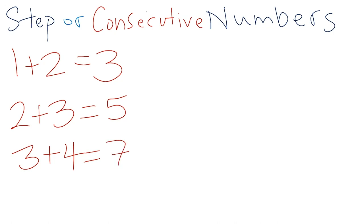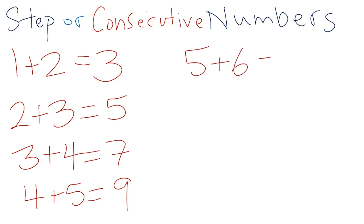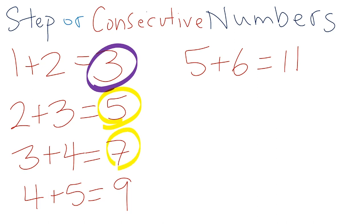I've already identified a pattern, but I want to make sure I'm correct. 4 plus 5: that's one less than 5 plus 5, so that's 9. Then 5 plus 6 equals 11 — I know that because it's one more than ten. Now I'm going to circle my answers so I can be very careful when looking for a pattern. We've got 3, 5, 7, 9, and 11. Do you see a pattern?